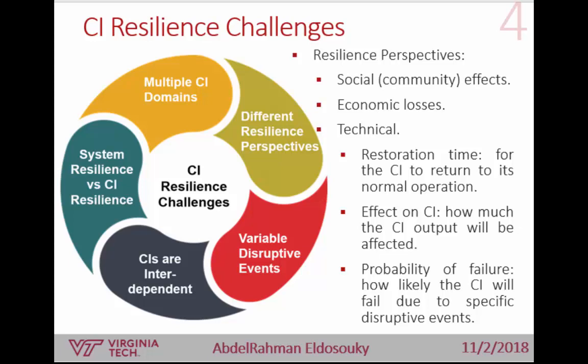Some perspectives in literature include social or community resilience, which targets how a community will be affected by infrastructure failure. Another aspect measures economic losses due to failure. More technical approaches target restoration time after failure — how quickly can infrastructure recover to normal operation — or measure the effect on infrastructure output against specific events. Finally, there is probability of failure: how likely the critical infrastructure will fail due to specific disruptive events.